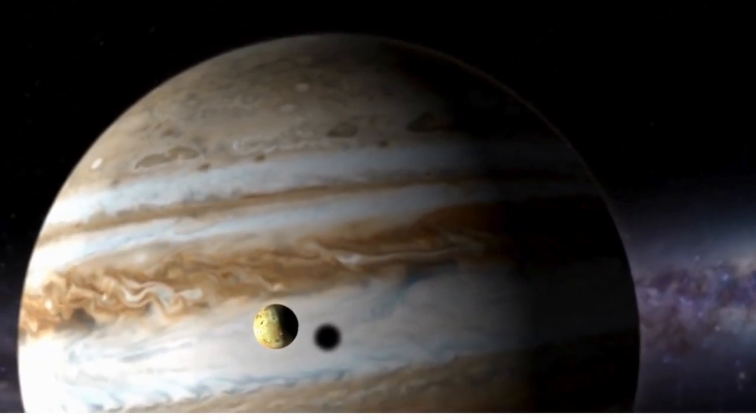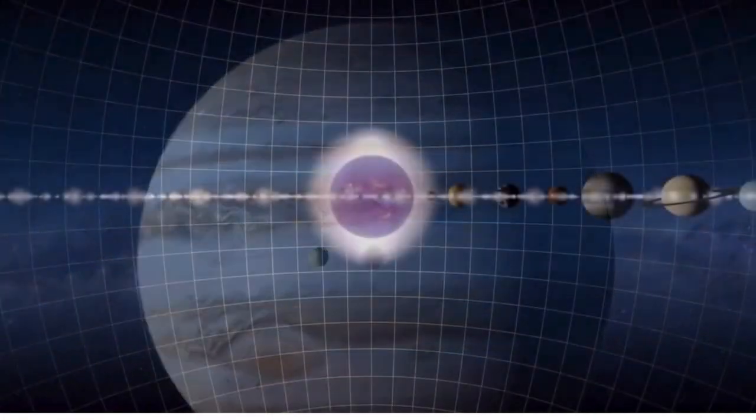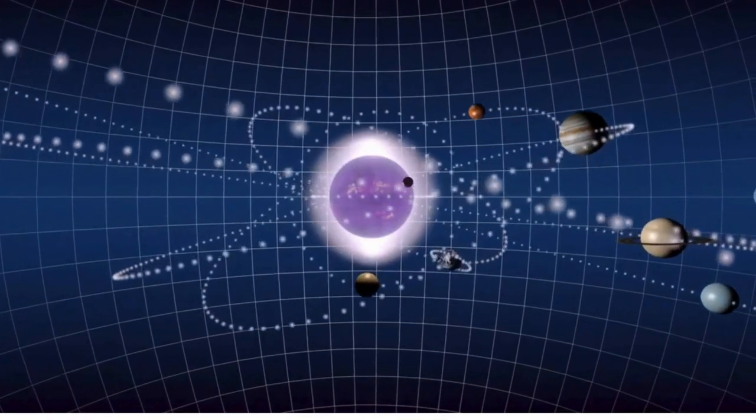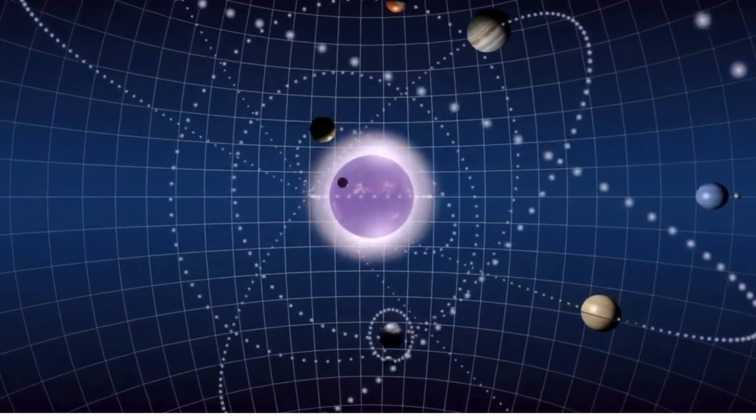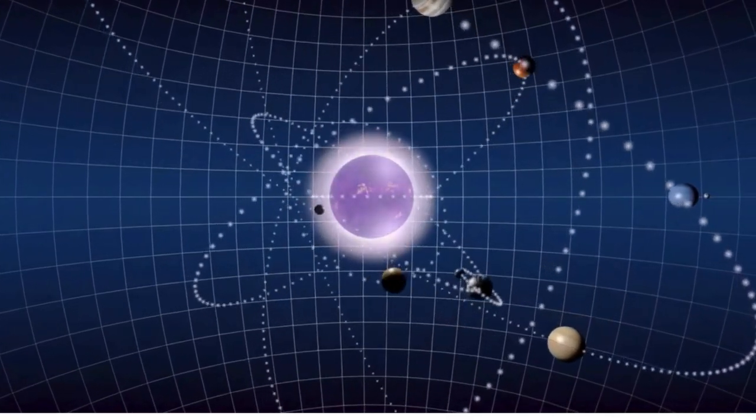Johannes Kepler proposed that the orbits of the planets were not perfect circles, but ellipses. Our planets travel in an ellipse and actually speed up when closer to the sun and slow down when further away.